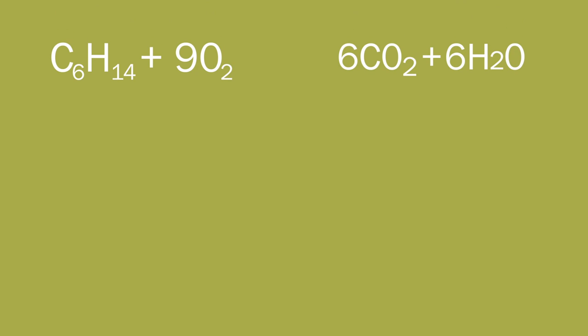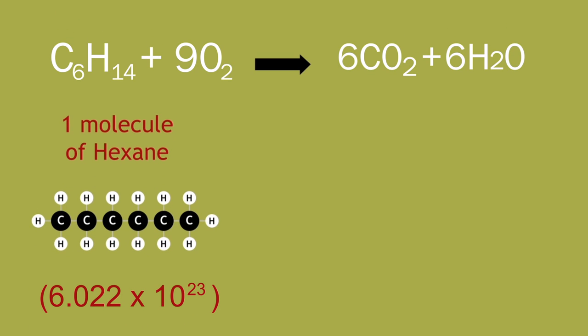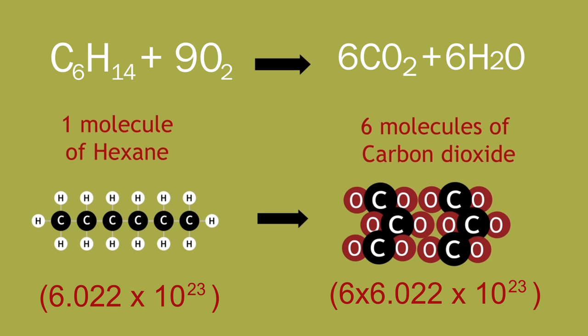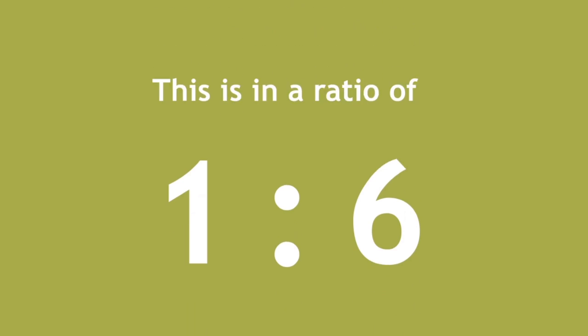The equation tells us that for one molecule of hexane, one mole, that's six molecules, or six moles, of carbon dioxide produced. So, this is in a ratio of one to six.